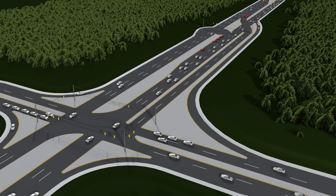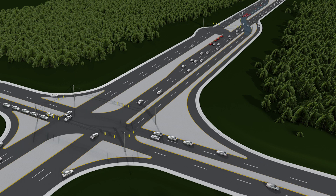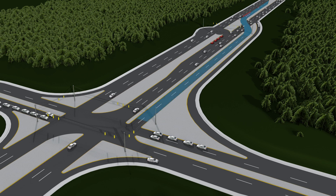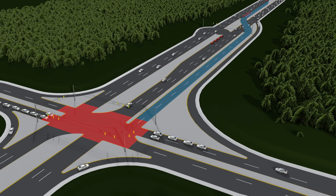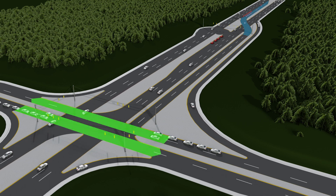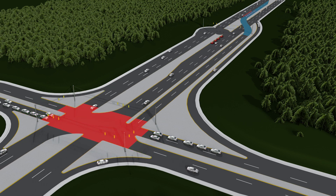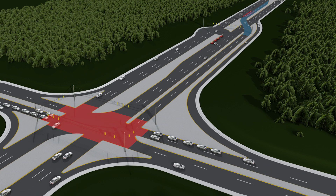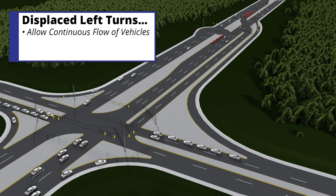With a displaced left turn, vehicles turning left cross oncoming traffic and move to the other side of the road before reaching the main intersection. A traffic flow signal alerts vehicles when to cross traffic. Traffic turning left moves simultaneously with through traffic. Signals at the main intersection and at the displaced left turn will control traffic movements, allowing for continuous flow of vehicles.